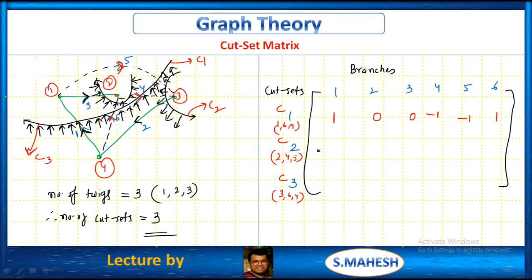C2 covers branches 2, 4, 5. Branch 1, C2 — no connection, 0. Branch 2, C2 — same direction, 1. Branch 3, C2 — no connection, 0. Branch 4, C2 — opposite, minus 1. Branch 5 — opposite, minus 1. Branch 6 — no connection, 0.